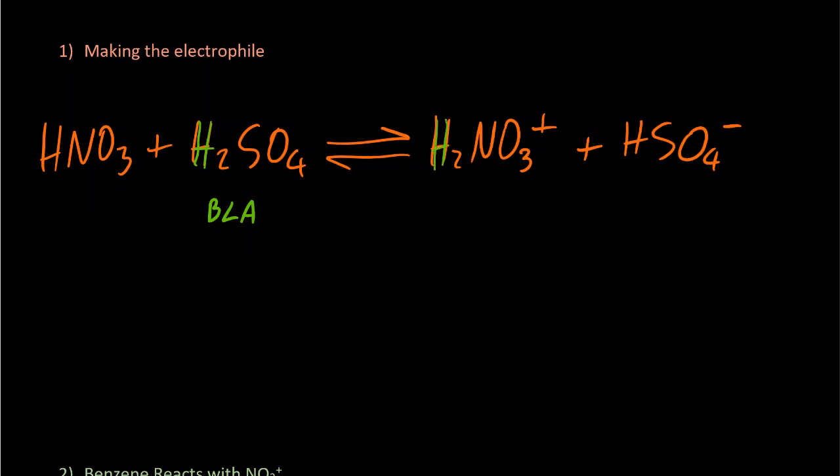Which means that this must be a Bronsted-Lowry base. It's receiving a proton, giving this as the conjugate acid. Conjugate acids are made by adding a proton, and that's the conjugate base. Now of course in IB you couldn't use these abbreviations, you'd have to write them out in full.